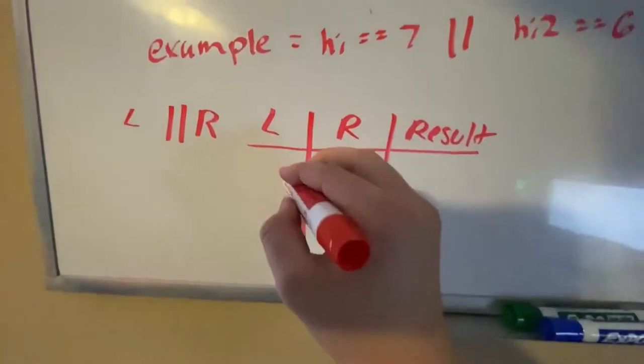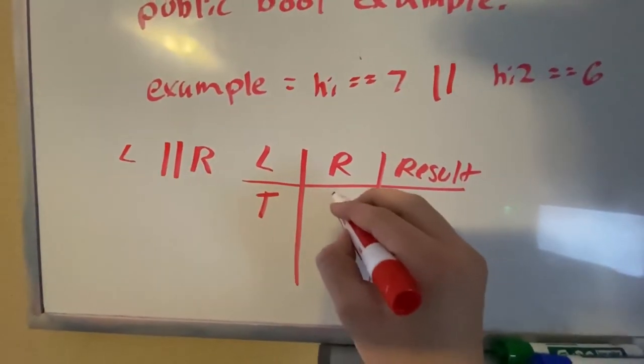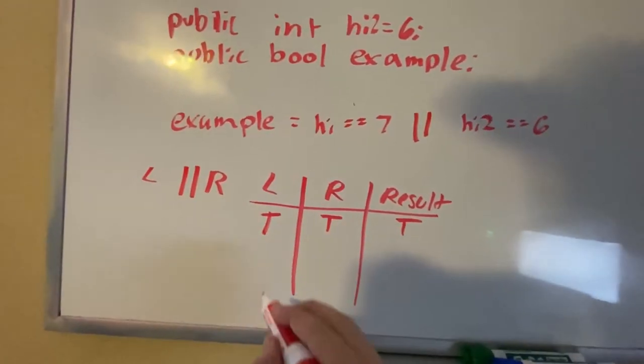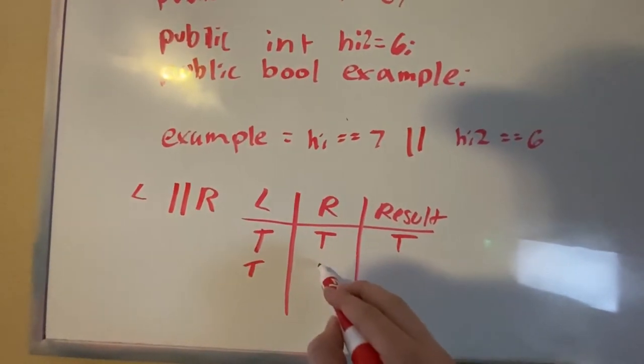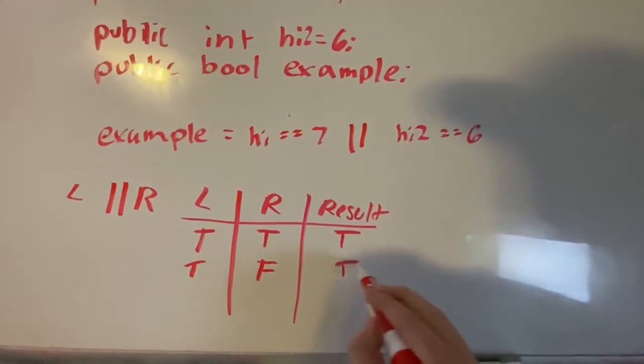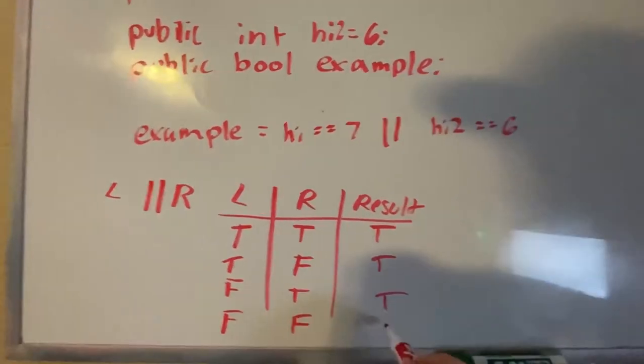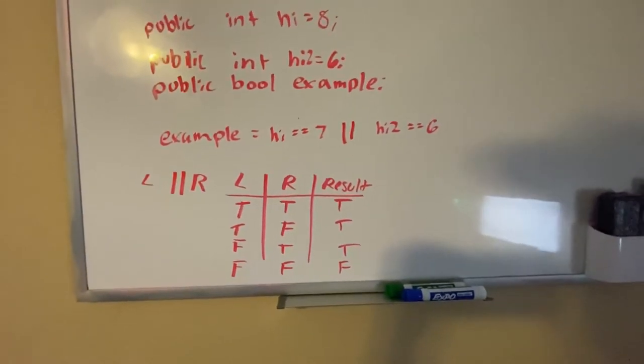I'm gonna make a little table for this too. Okay, so we have our table down here. So let's say the left is true and this one's true, and the result can be true. If both are true, then it's gonna be true. So let's say the first one is true, the second one is not, then it's gonna be true, same thing vice versa. But if they're both false, then our result can be false, just like that.